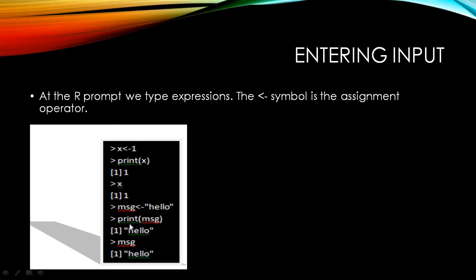I follow the same approach — this is explicit printing. I have the R prompt, then the print command, I put MSG in brackets, and I get the output as hello. Now for auto printing of the same: I have the R prompt, then I type MSG and hit enter, and I get the output as hello. Either way, it's the same.